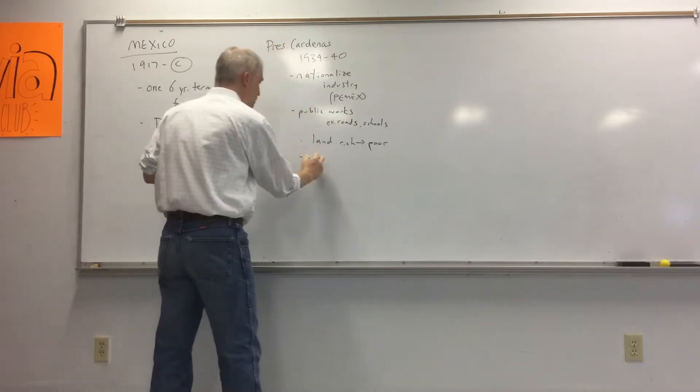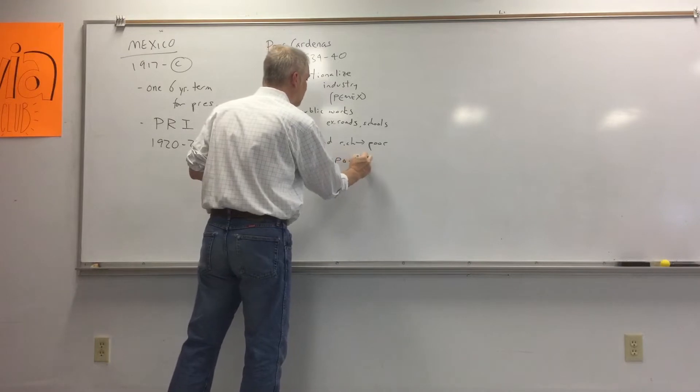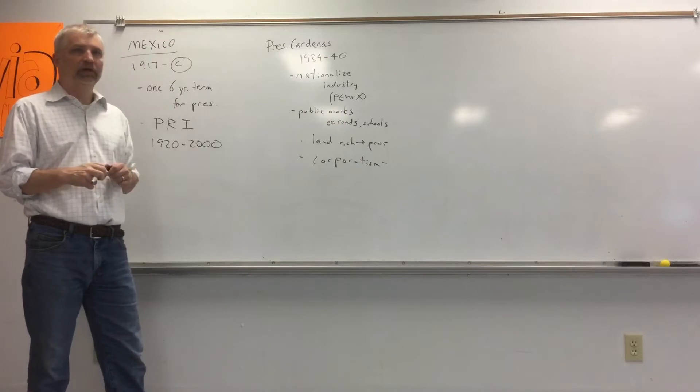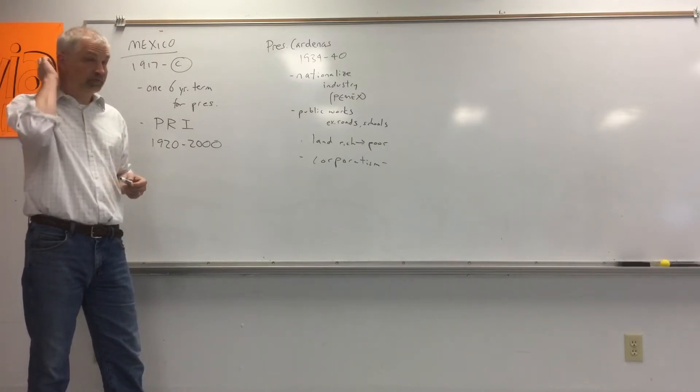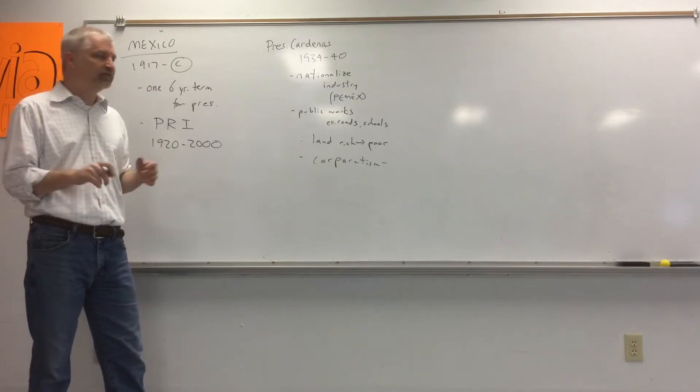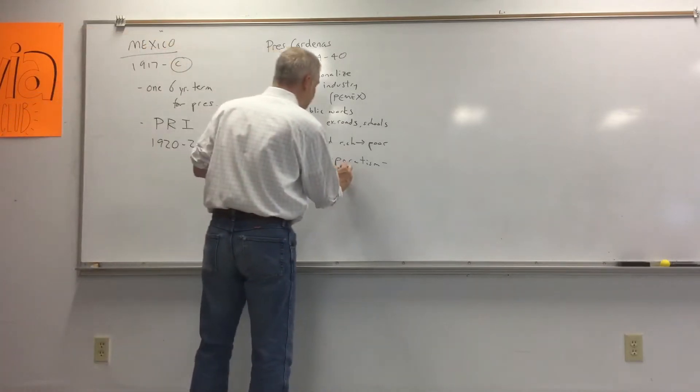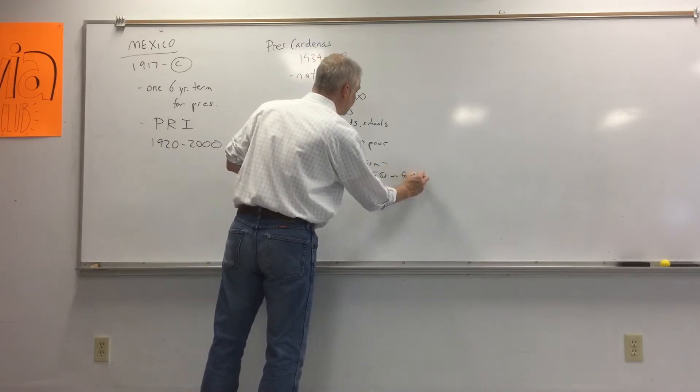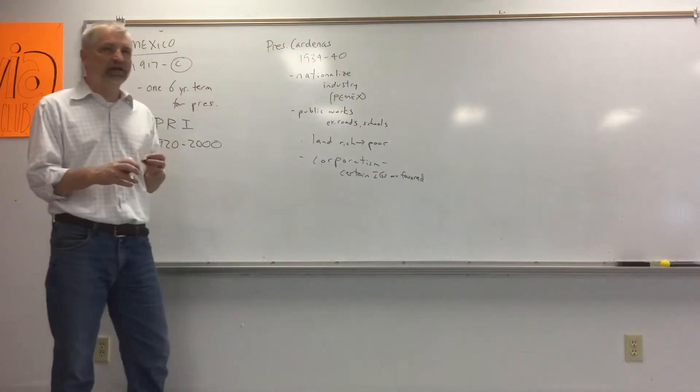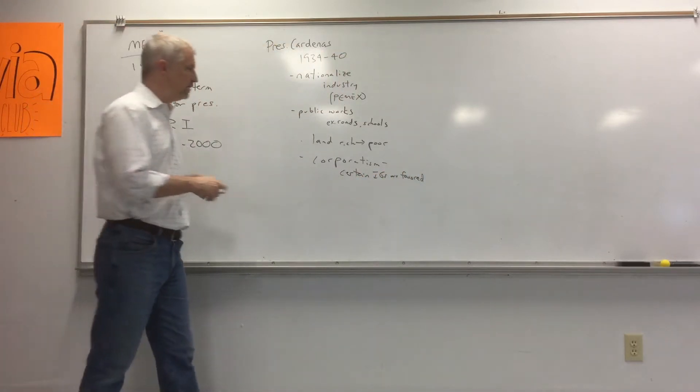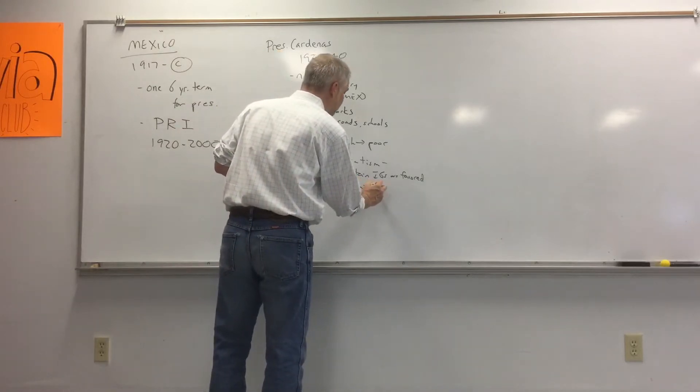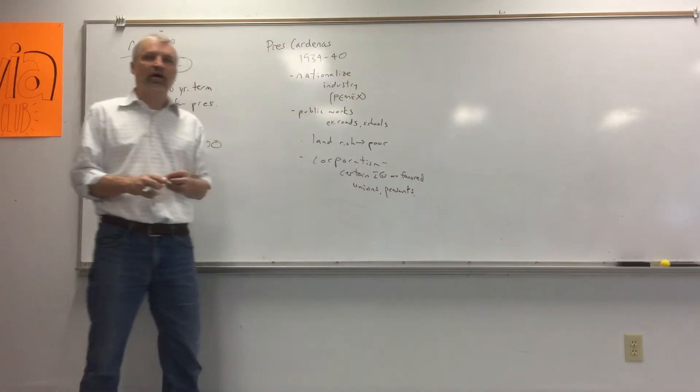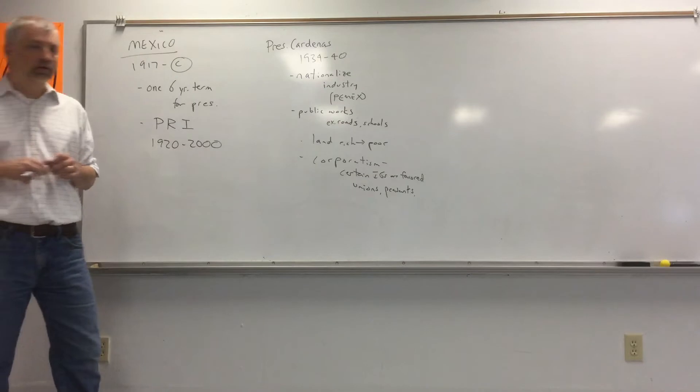Then he also has a system called corporatism, C-O-R-P-O-R-A-T-I-S-M, which is different from pluralism with our interest group system where interest groups are private and ask the government for things. In corporatism, certain interest groups are favored by the government and have a seat in the government, and get to sit in on the meetings. For him, those interest groups were unions and a group representing peasants. Basically, the common man had a seat in the government under Cardenas.